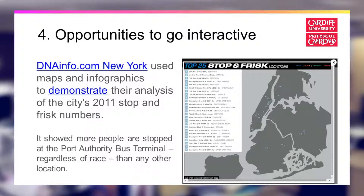If you have the skills, you may want to consider opportunities to go more interactive and create interactive elements on your website or in a standalone space. Here's an example from DNAinfo.com in New York, where they took information related to stop-and-frisk numbers and created an interactive feature showing where the top 25 stop-and-frisk locations were, allowing analysis across a range of demographics to see whether there were differences in who was stopped and where.